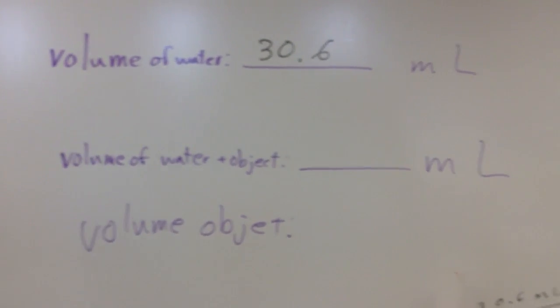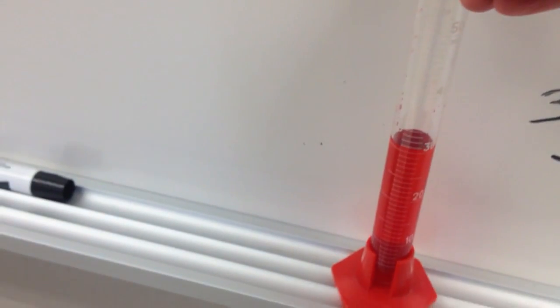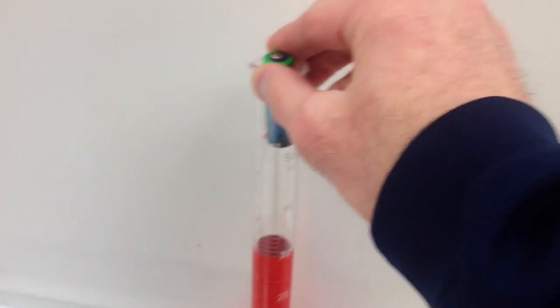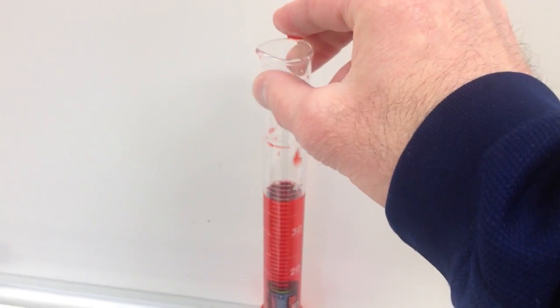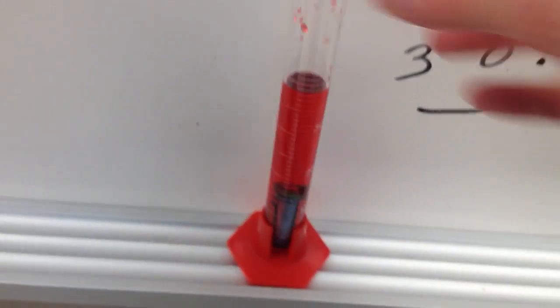Now I've got the volume of my water plus object is what I want to measure next. So I'm going to take my battery, which I left on my balance, which is just rude because that means other people can't be using it. I'm going to take my battery and I'm going to place it gently and carefully so not to splash everything into my graduated cylinder. That was way too much splashing. I should probably start over again because I probably lost some of my water.